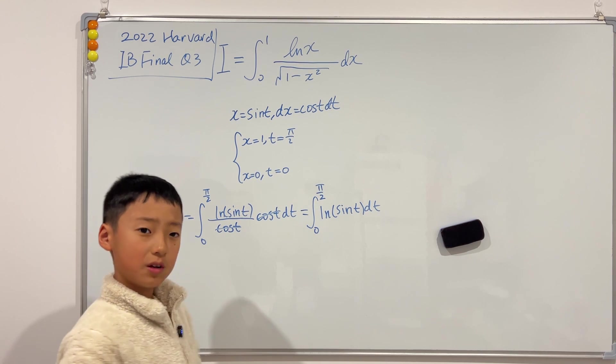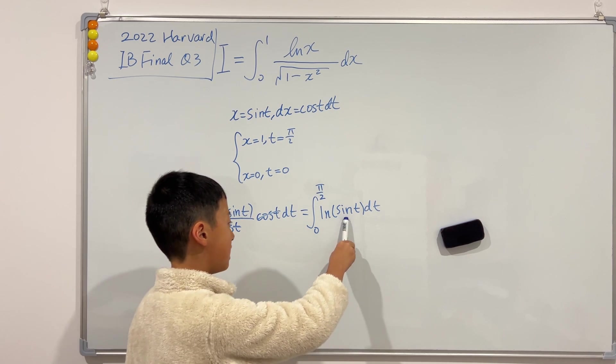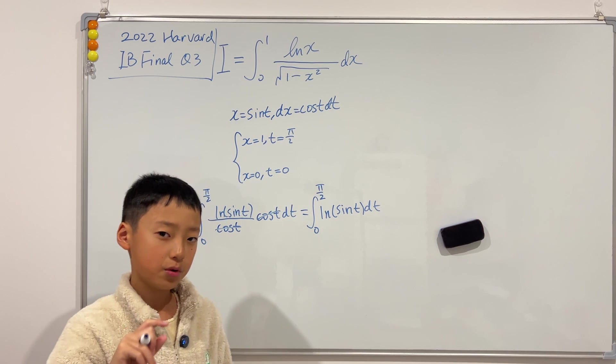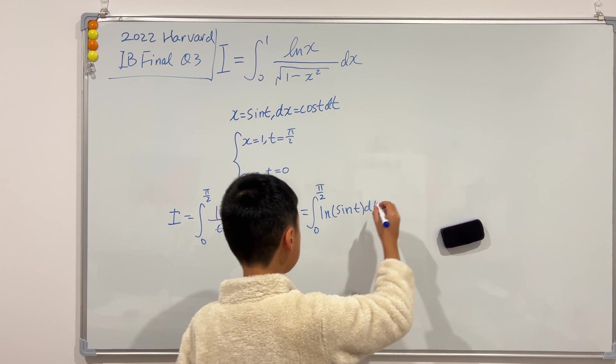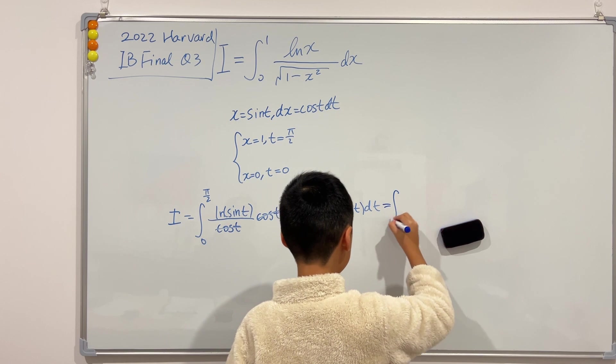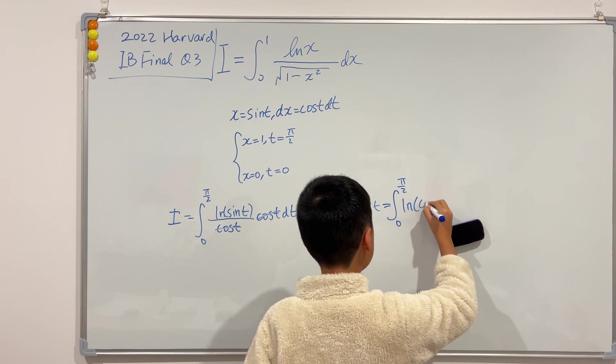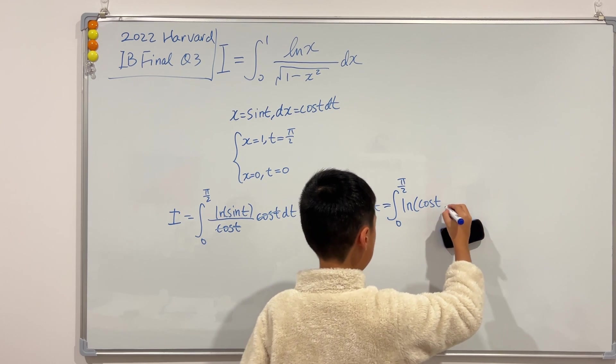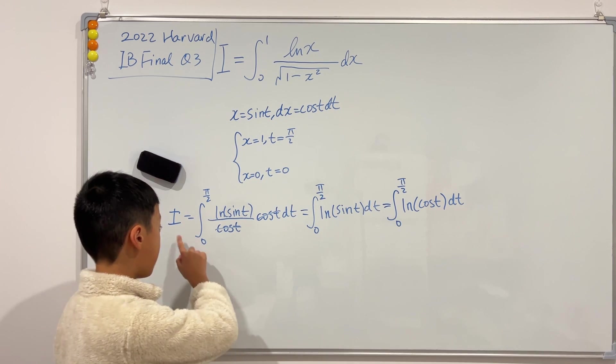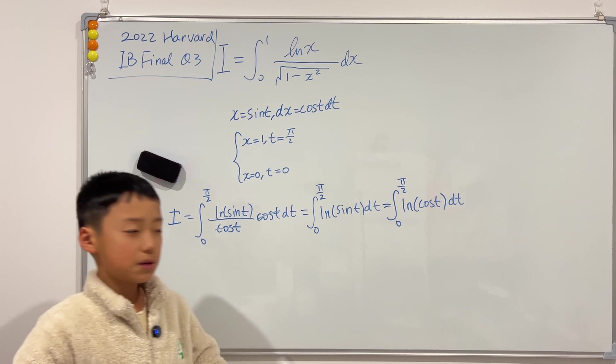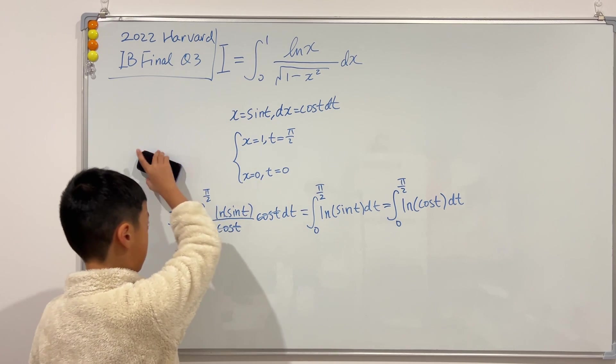Well, if you watched one of my previous videos, then you know that between 0 and π over 2, sine t and cosine t can actually swap. And if you don't know why, you can watch one of my previous videos. So this is also equal to the integral from 0 to π over 2 of ln of cosine t. So if we know that i is equal to this and i is equal to this, then a very typical way is just to add them up. So we are actually going to do that.